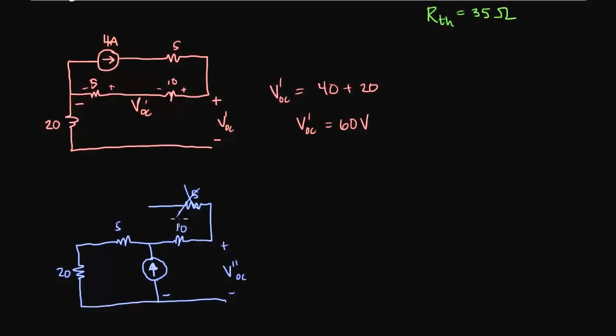There's no current flowing through here. It can't be, because you can't have current without a loop. So we could think of V double prime as simply being the voltage across this source here, which is 2 amps.